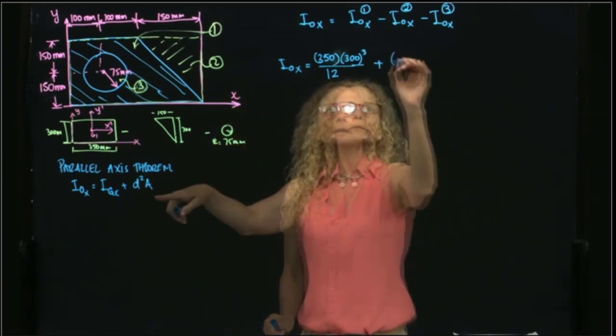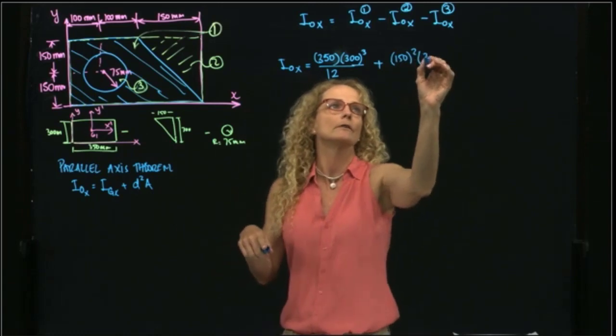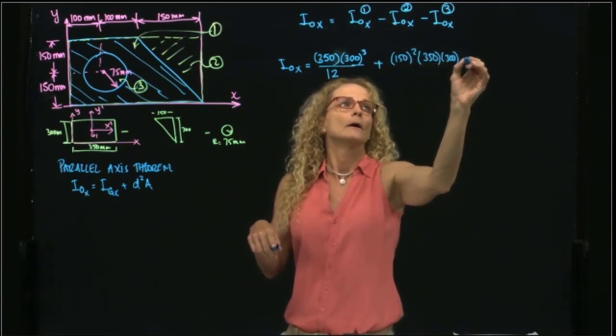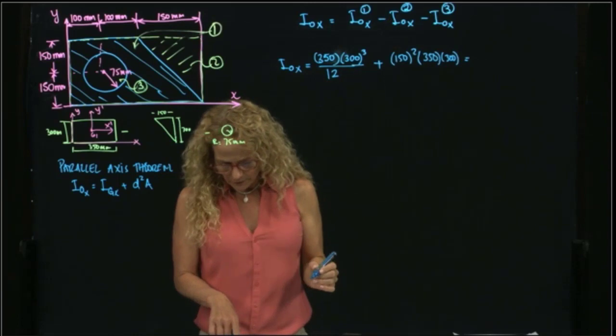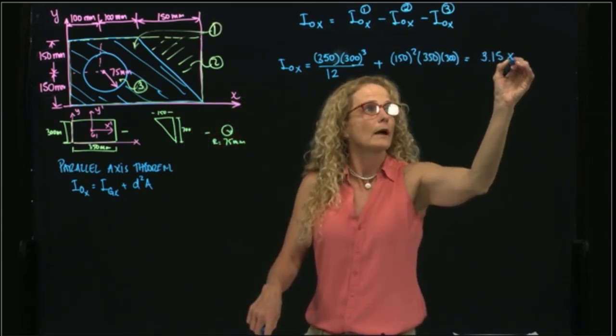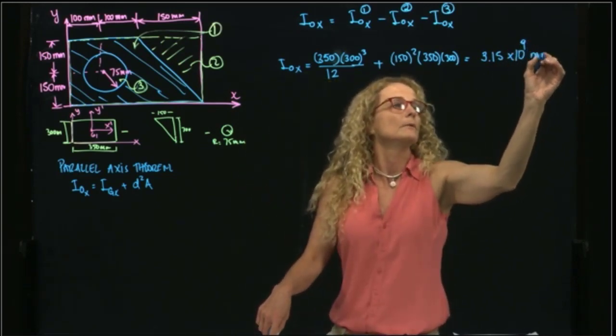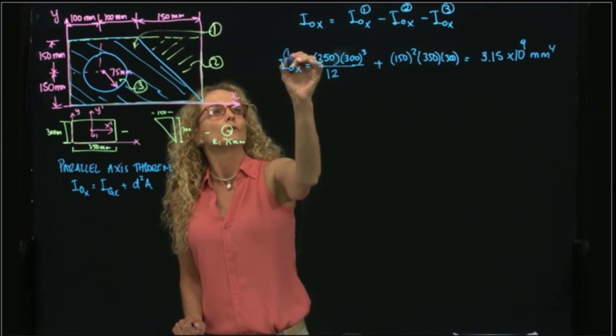So I will have 150 squared times the area, which is 350 times 300. And I have this calculation right here, 3.15 times 10 to the ninth millimeters to the fourth. This is the first one.